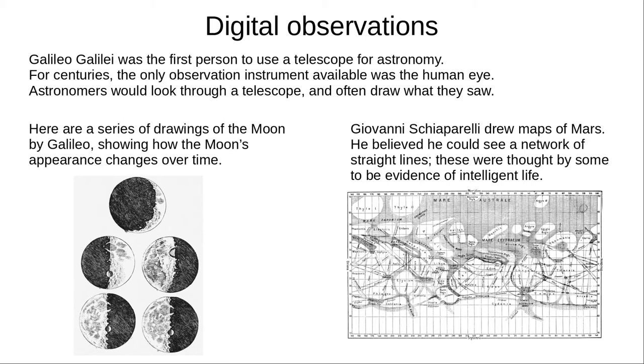Giovanni thought they were natural waterways, while some astronomers thought they were artificial and evidence of intelligent life on Mars. In fact, they were simply optical illusions. They don't exist.